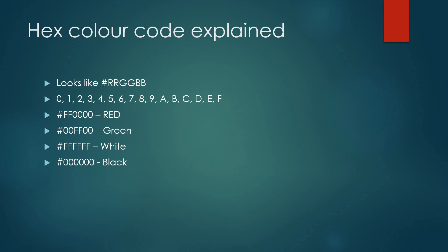Hex color will be in the format RRGGBB — red, green, and blue. The color code will be 0 to 9 then A to F. If FF is in place of RR (red) then it is full red, and 00 and 00 means there is nothing in green and blue, so it will be only red. Similarly, 00 for red, FF for green, and 00 for blue gives only green. F is the maximum color and 0 is the lowest. If all are F, it will be white; all 0 means black.